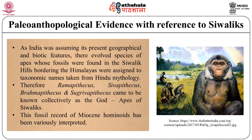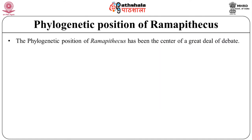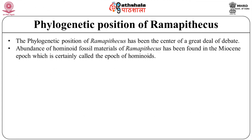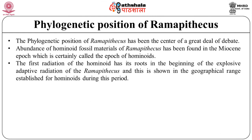Now let's see the phylogenetic position of Ramapithecus. The possible hominid status or phylogenetic position of Ramapithecus has been the center of a great deal of debate. A great abundance of hominoid fossil material of Ramapithecus has been found in the Miocene epoch, which is certainly called the epoch of hominoids. The first radiation of hominoids has its roots in the beginning of the explosive adaptive radiation of Ramapithecus.